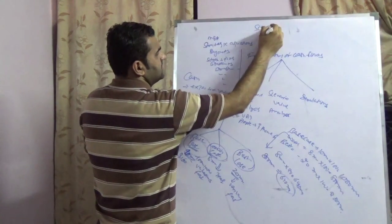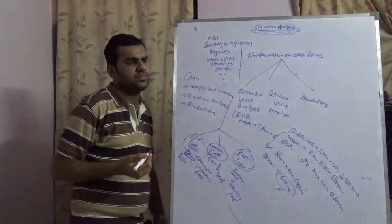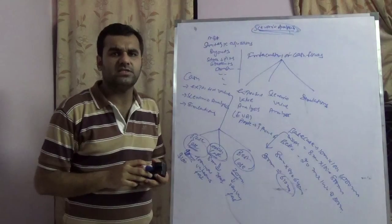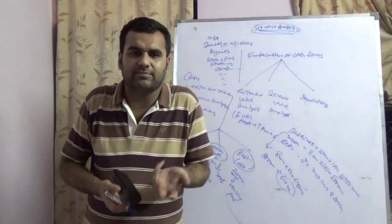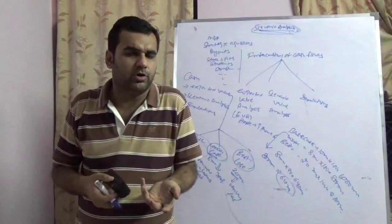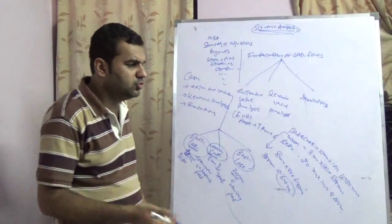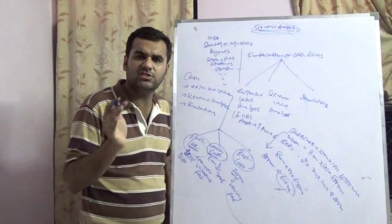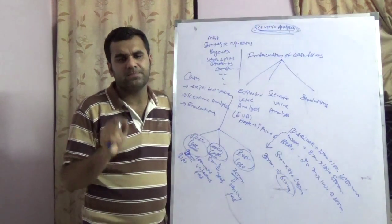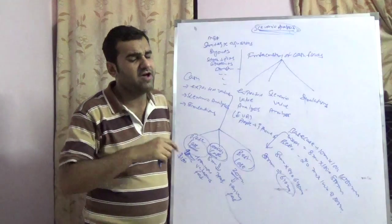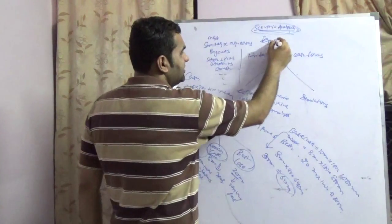Now comes the second technique, which is known as scenario analysis. Scenario analysis refers to Apple comparing various scenarios for their cash flows — for example, what would happen if they launch iPhone 6 and Samsung, Nokia, or BlackBerry come up with competing products. You make various scenarios — scenario one, scenario two, scenario three — which could be the worst scenario or the base scenario, and based upon all scenarios you calculate the cash flows.